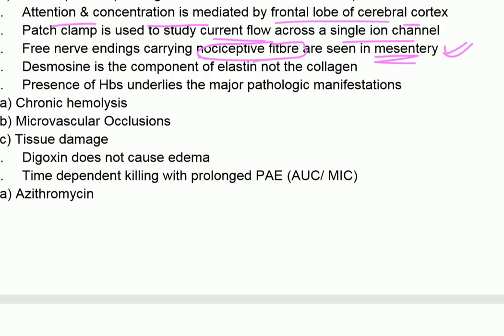Desmosine is a component of elastin — not collagen. Presence of HbS underlies the major pathological manifestations including chronic hemolysis, microvascular occlusions, and tissue damage. Digoxin does not cause edema.